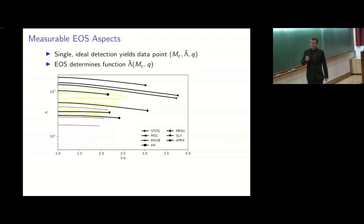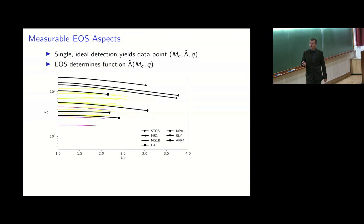Now the more interesting part: tidal deformability. Before discussing what was detected, consider what could be measured with an ideal, noise-free detection. You'd get a data point in chirp mass, effective tidal deformability, and mass ratio. For a given EOS you can compute the effective tidal deformability as a function of chirp mass and mass ratio — plotted here for a bunch of nuclear physics EOS models. There is a large range in tidal deformability depending on EOS, and some curves cross, meaning even with an ideal measurement you cannot distinguish certain equations of state from each other.